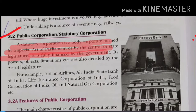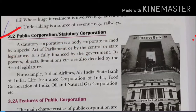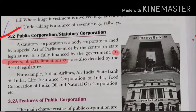The whole portion is funded by the government — all the money is put into account by the government itself. Its powers, objectives, and limitations are defined in the same act. The existence of the special act is passed, and that same act defines the powers, objectives, and limitations of the enterprise.